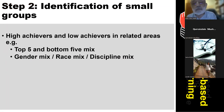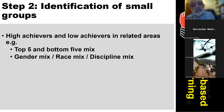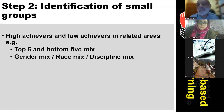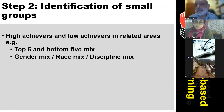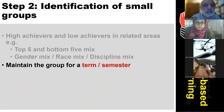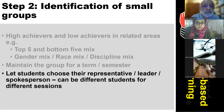Groups should mix high achievers and low achievers — the top five and bottom five. Mix gender and, as is relevant in Malaysia where there are three races, mix them properly. Mix disciplines, and if you have interprofessional sessions, mix students from different disciplines. Maintain the group for a term or semester to help build better group dynamics. Let students choose their own representative, leader, or spokesperson, and this can be a different student for different sessions.